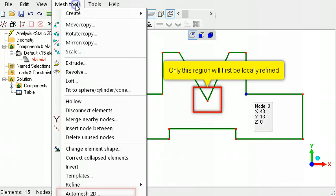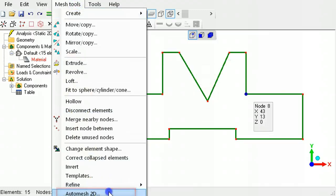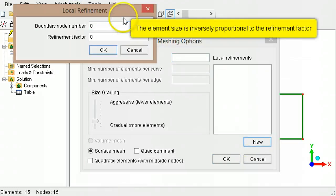Then use the two-dimensional auto mesher. Click the New button to add a new local refinement. Specify the node number and a refinement factor.